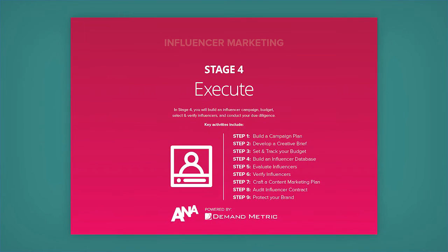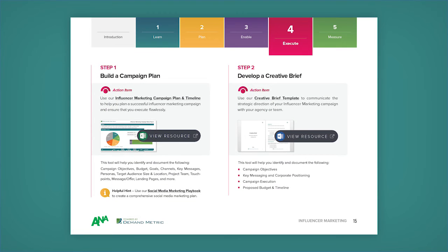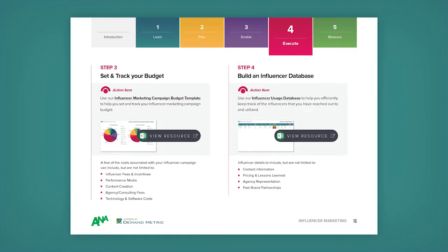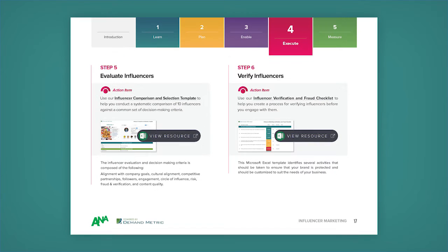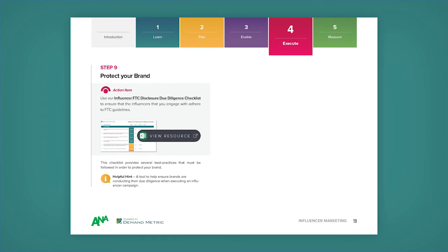In stage four, it's all about execution. In here, you're going to start by building a campaign plan, developing a creative brief, setting and tracking your budget, building an influencer database, evaluating influencers, verifying influencers, crafting a content marketing plan, auditing influencer contracts, and protecting your brand.